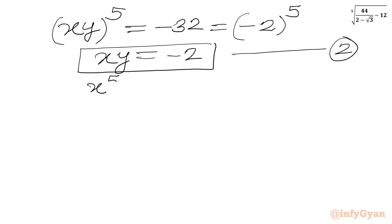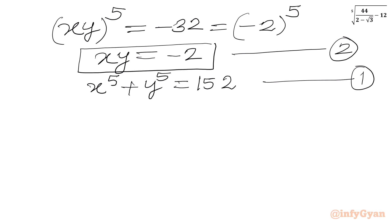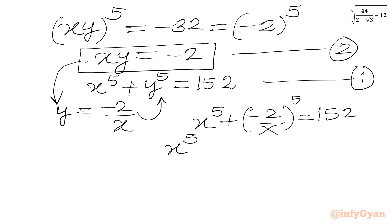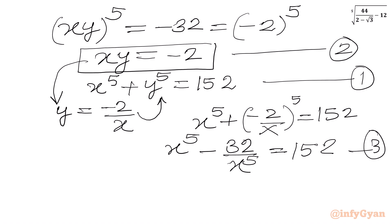From equation 1, x⁵ + y⁵ = 152, and from equation 2, xy = −2, so y = −2/x. Substituting into the equation: x⁵ + (−2/x)⁵ = 152, which gives x⁵ − 32/x⁵ = 152. This is equation 3.